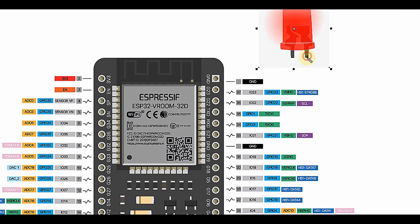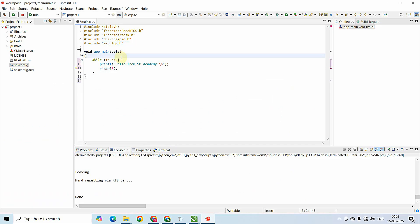So the cathode goes to ground and the anode goes to GPIO23, which is pin number 37 on the 38-pin ESP32 development board. I'm not connecting any resistor since the ESP32 operates at 3.3V, so the LED will not blow. For safety you can add a 1kΩ or 330Ω resistor, but leaving it as-is will also work fine and the LED will blink.